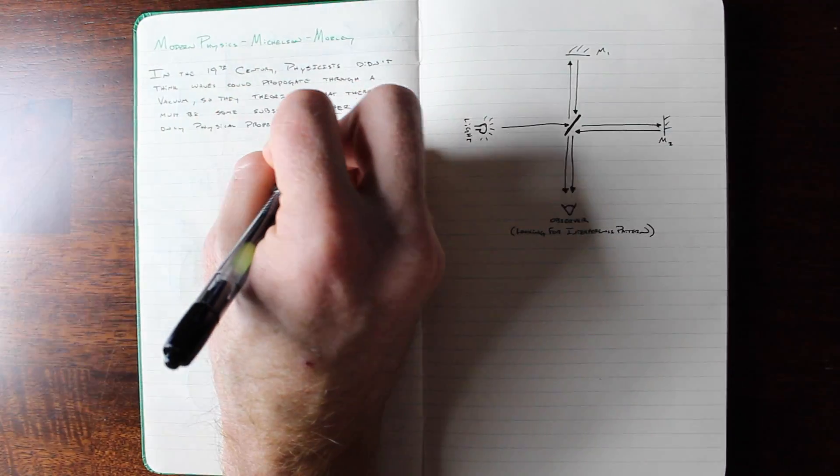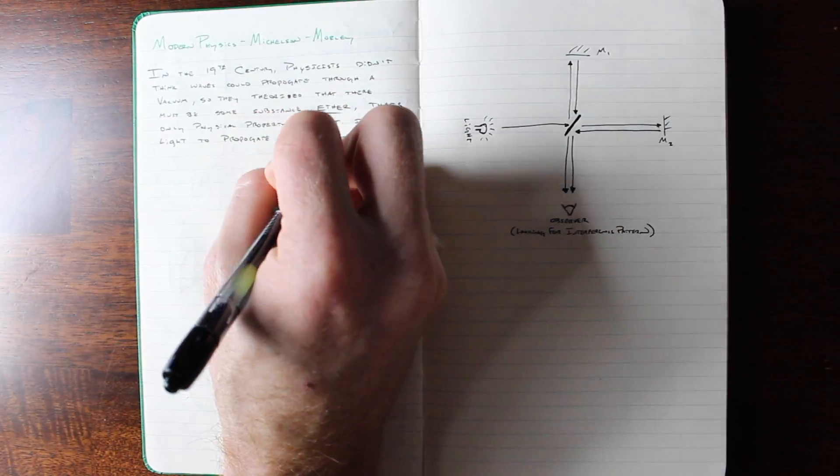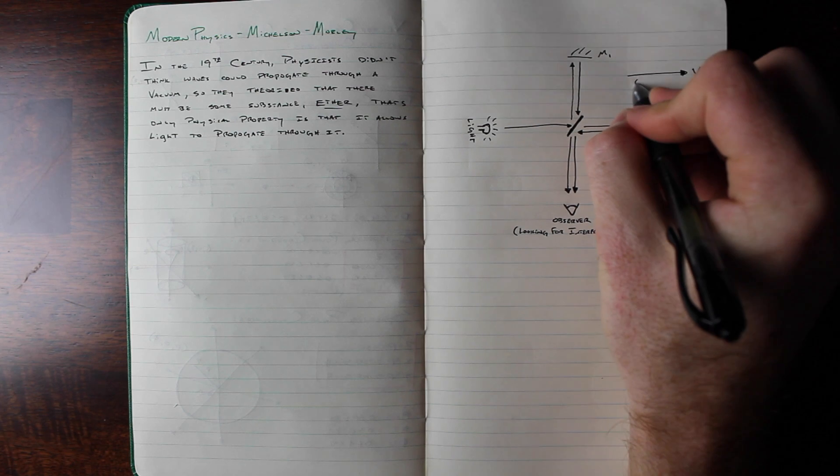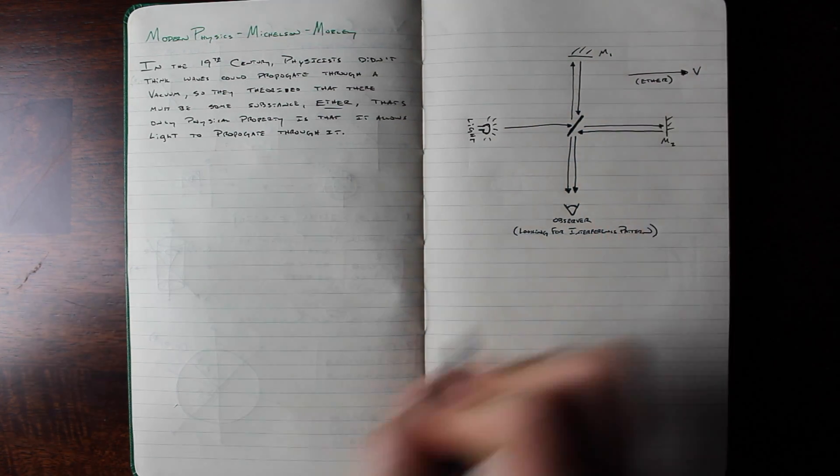If this proposed ether existed, as the Earth orbited the sun, we would travel through it creating a velocity that would alter the speed of light, just as sound waves differ when a car is heading toward you and then away from you.